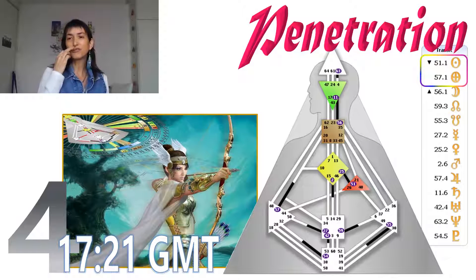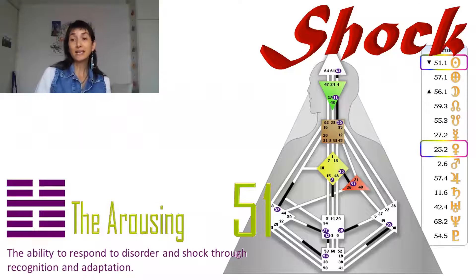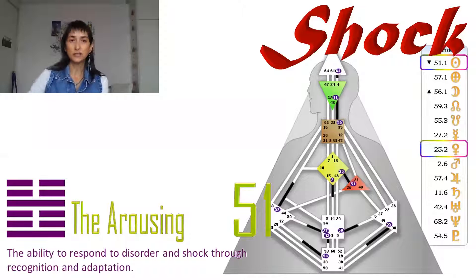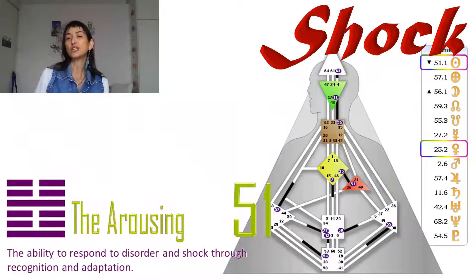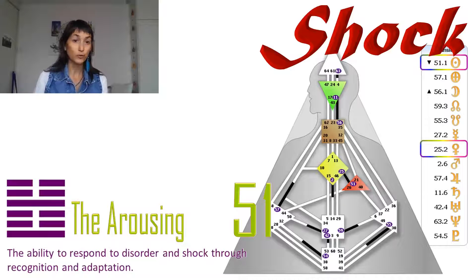So yes, the cross of penetration, the sun is in the gate of shock. And we get Venus. Venus is in retrograde and she is still staying in the 25th gate. So we get the channel of initiation for a few days.